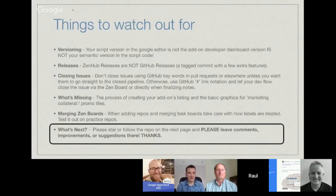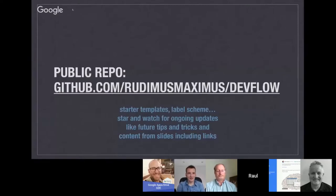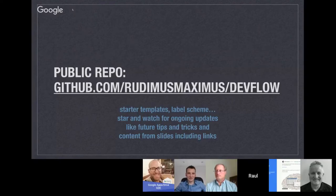There's a list of things to watch out for — like merging zen boards, closing issues, some gotchas, and notes on releases and versioning. What's next: go to this repo and you'll find the starter templates and the label scheme. If you star and watch it for ongoing updates, I plan to update this dev flow repo with demos in the future and model what the dev flow looks like. It's a public repo and the slides are up there as a PDF with all listed links live.